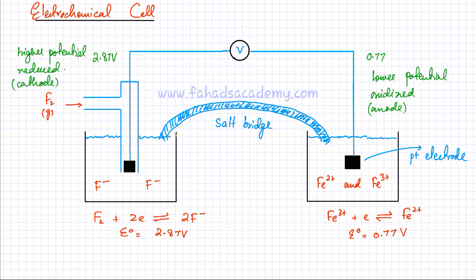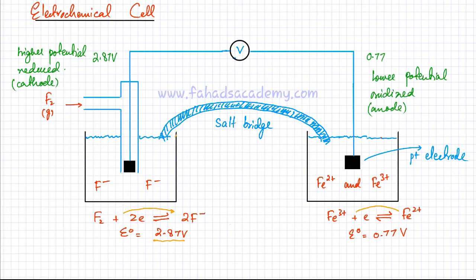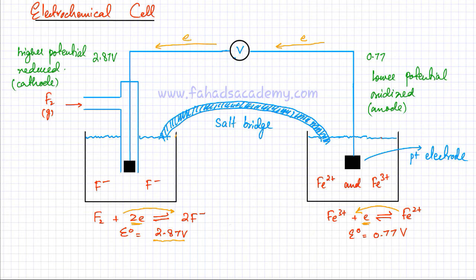Looking back at the equations, fluorine would be getting reduced because it has a higher potential and a high E-nought value, so it would have a high tendency to gain electrons. If I connect the two electrodes together, fluorine would be the one gaining electrons, whereas the right-hand electrode, which is the lower potential, would lose electrons — it's going to get oxidized, producing electrons, and fluorine would be gaining them. So electrons are going to travel from the lower potential side to the higher potential side.